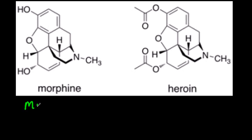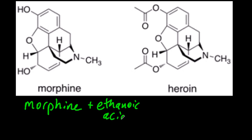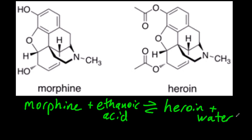So how do you make heroin? Get some morphine and warm it up with ethanoic acid, and you'll make heroin and water. Don't forget to add the sulfuric acid catalyst.